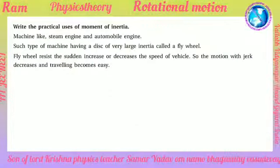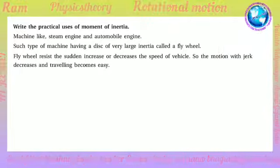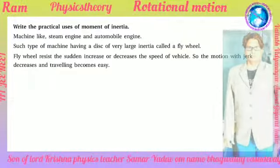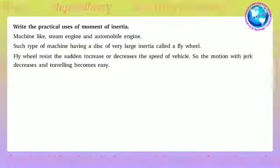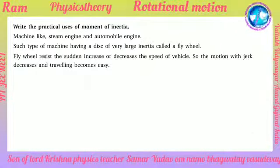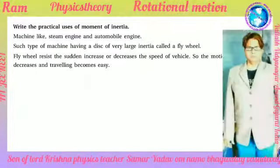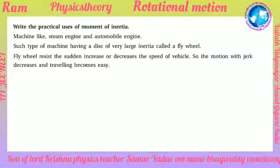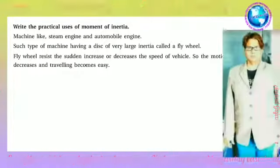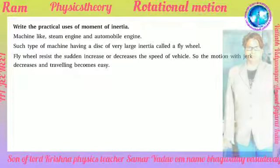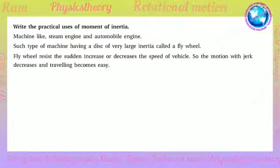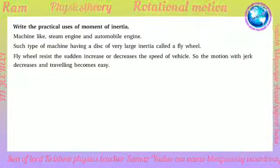Practical uses of moment of inertia: machines like steam engines and automobile engines have a disk of very large inertia called a flywheel. The flywheel resists sudden increases or decreases in speed of the vehicle, so motion jerks decrease and traveling becomes easier.